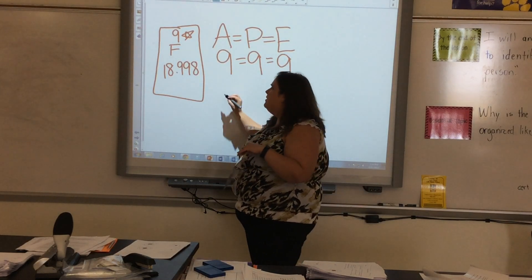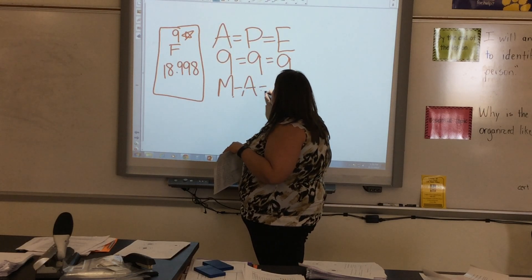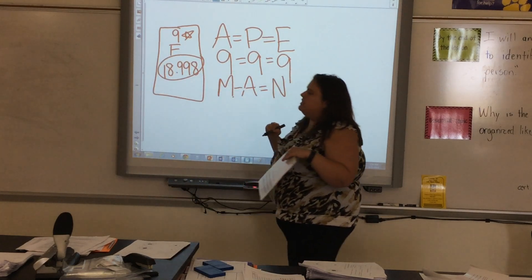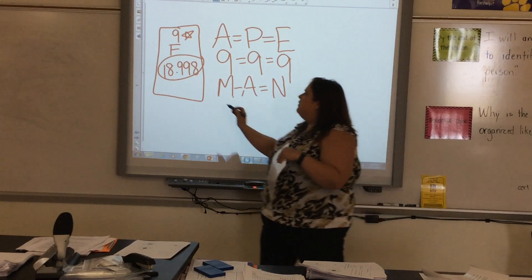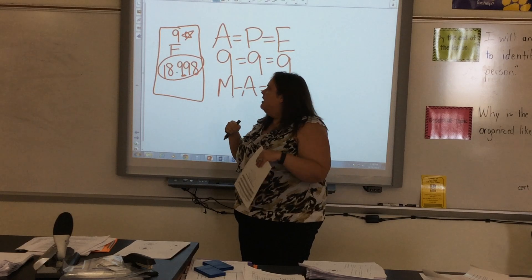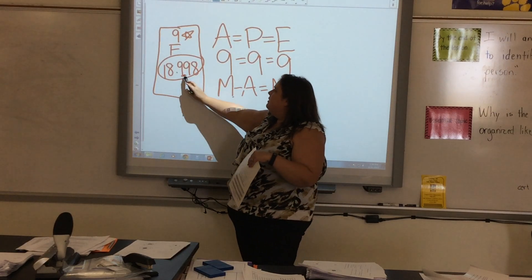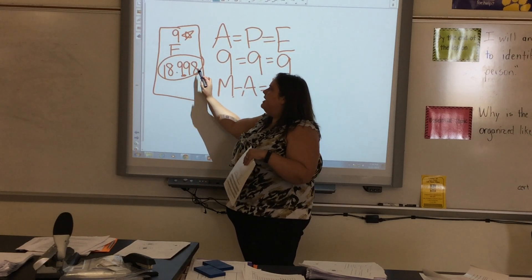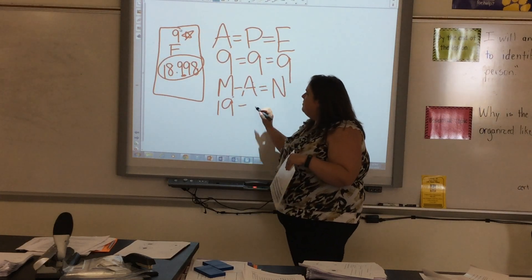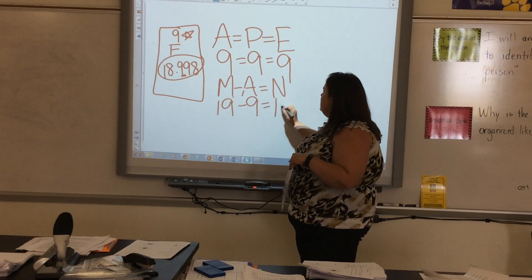Okay, in the next part, we're going to figure out the number of neutrons. We do M minus A equals N. Here is my mass, and it's always going to be in decimal form. We want to round that. So if this first number right here after the decimal is 5 or higher, we're going to round up. If it is 0 to 4, we're going to round down. This particular number we're rounding up. So 18.998 will become 19. A is the atomic number. So 19 minus 9 equals 10.